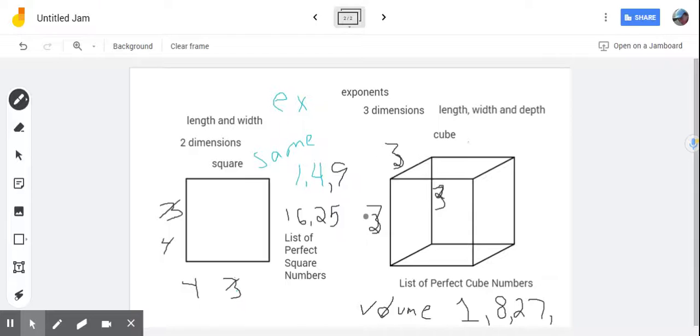Well, what number comes after 3 when you count by 1s? Very good. 4. So, if I said this cube was 4 by 4 by 4, all the sides are the same. The volume is 64, because 4 times 4 times 4 is 64. And that's how I start my perfect cube number list.